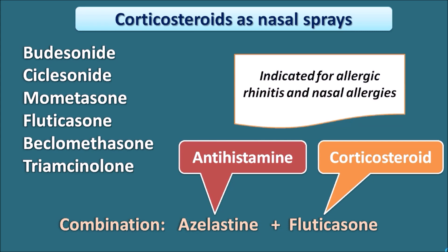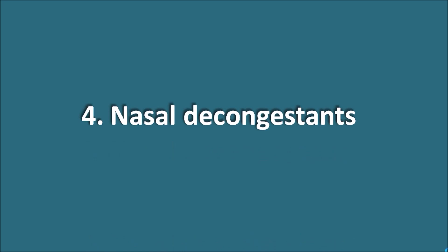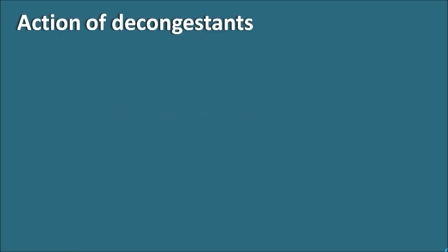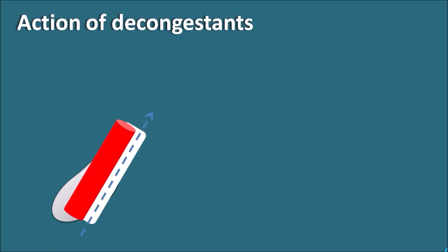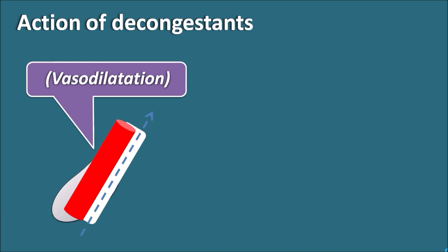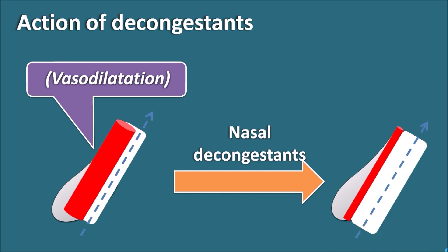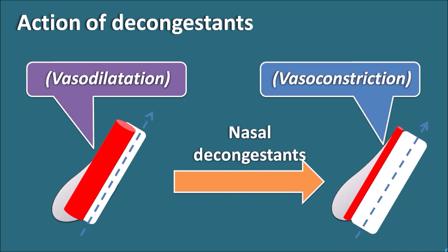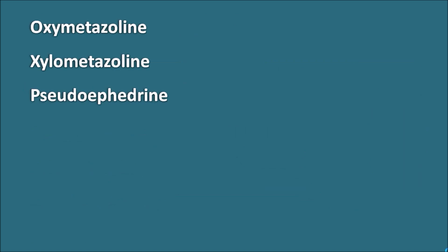The fourth type is nasal decongestants, one of the most widely used drugs via the nasal route. When nasal blood vessels undergo vasodilation, they block the nasal pathway. Nasal decongestants act as local vasoconstrictors, constricting blood vessels within the nasal pathway to clear it and relieve congestion. Drugs include oxymetazoline, xylometazoline, and pseudoephedrine.